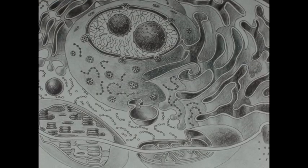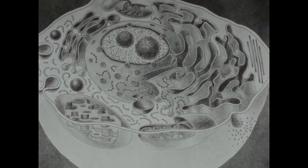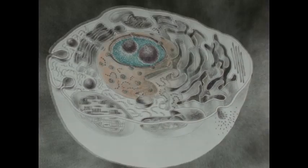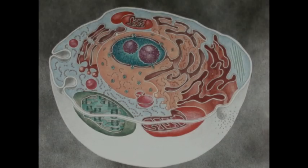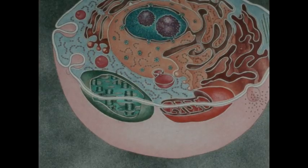A cell, whether from a plant, animal, or protist, is organized into three distinct regions. Nucleus, cytoplasm, and the plasma membrane.